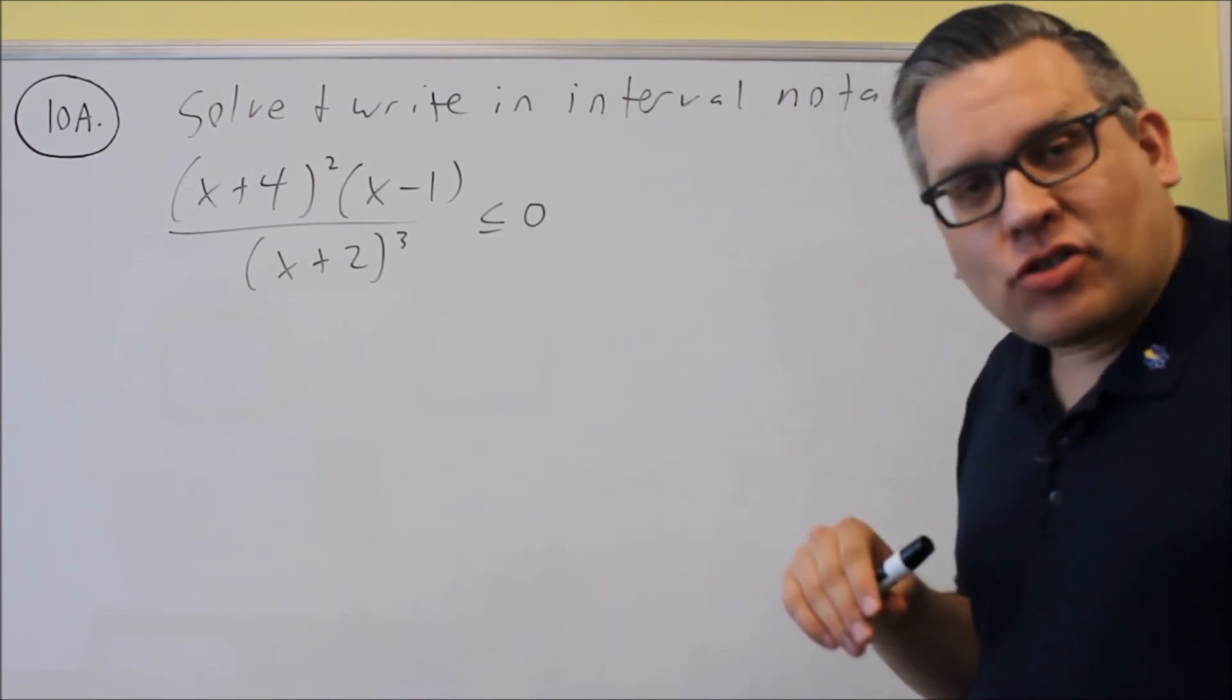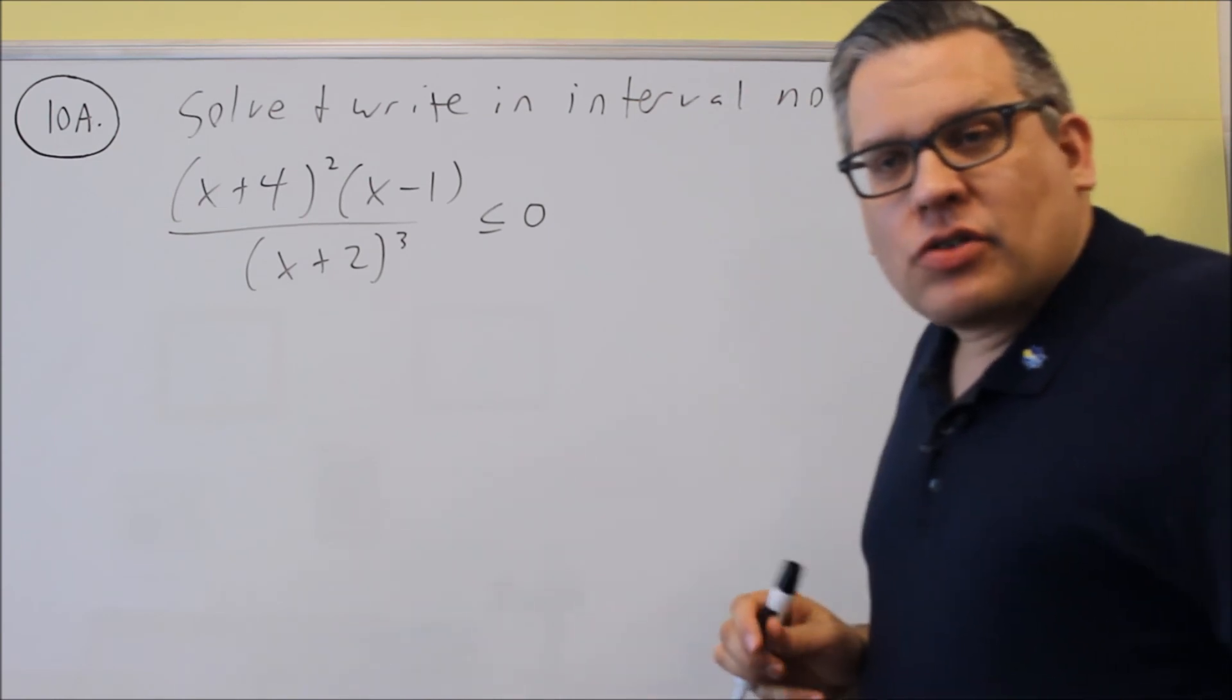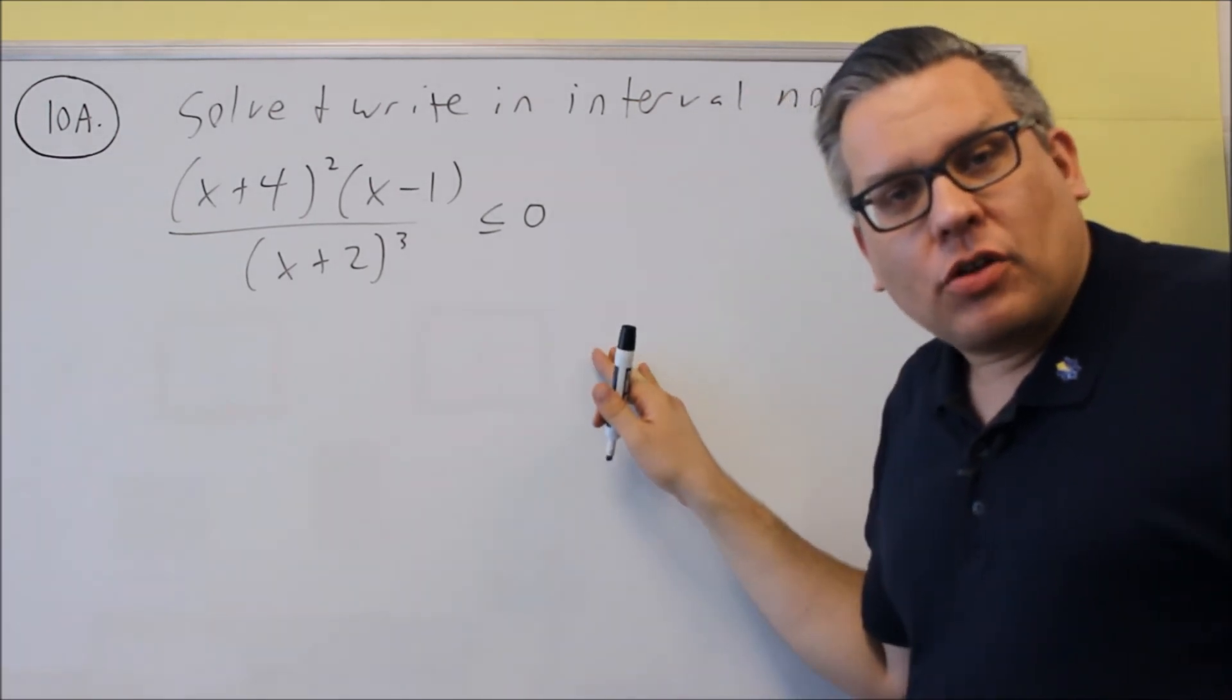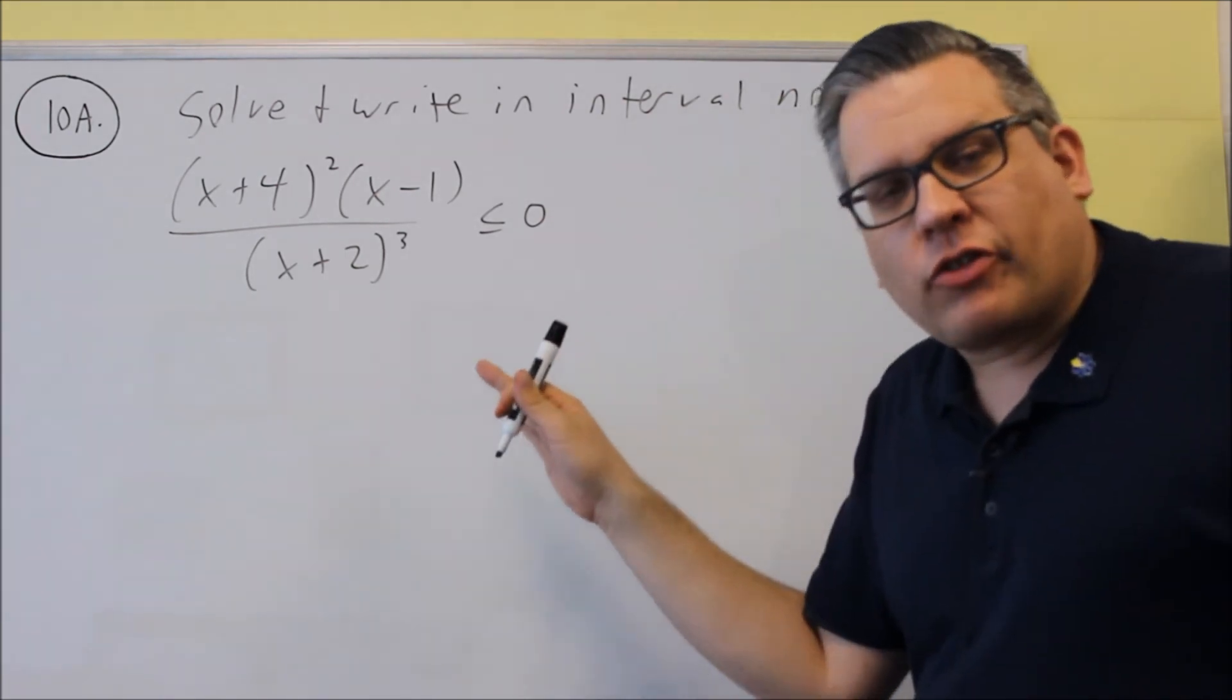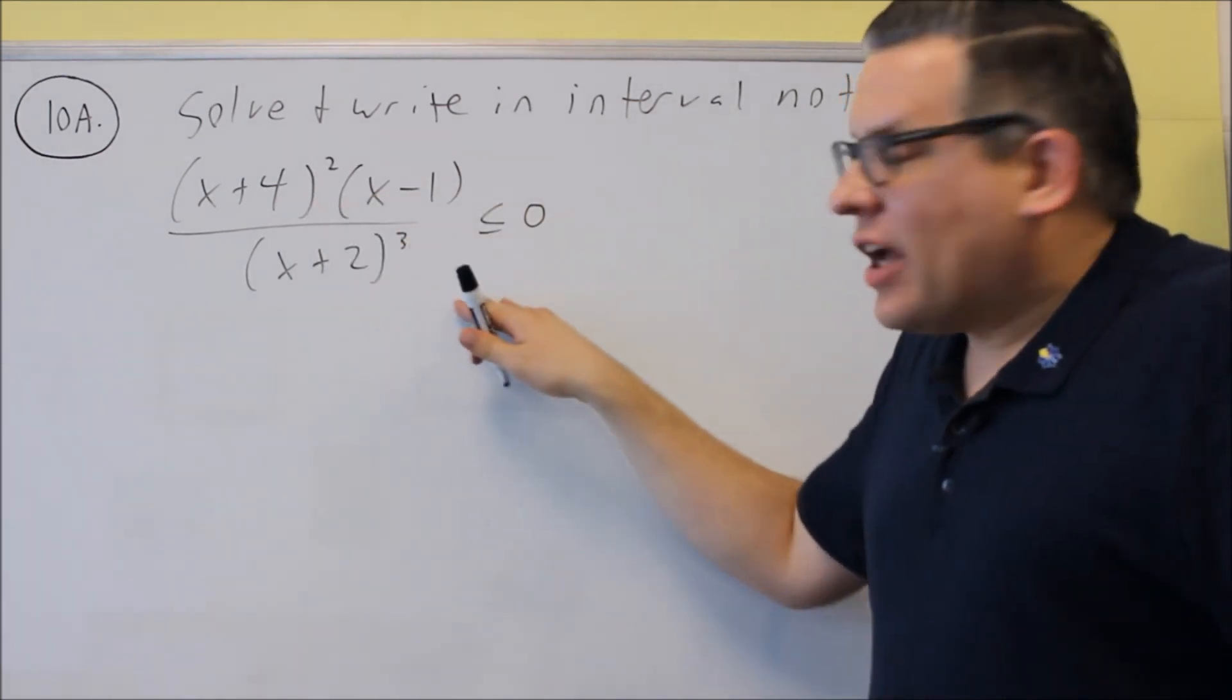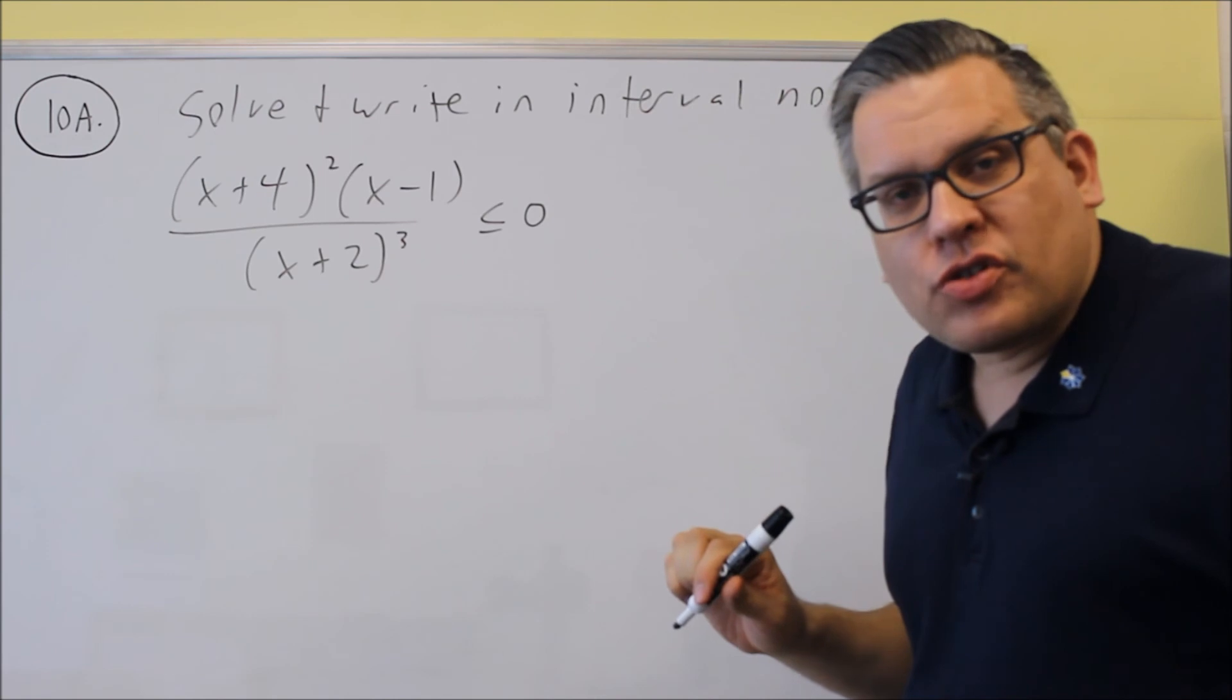So in the answer key, I did both of them with the table method and so I'm also going to show you how you can do the number line method as well. So for this one, whatever method you use, either table method or number line, you want to take all the factors, whether they're multiplied or divided, and you want to set them all equal to zero.